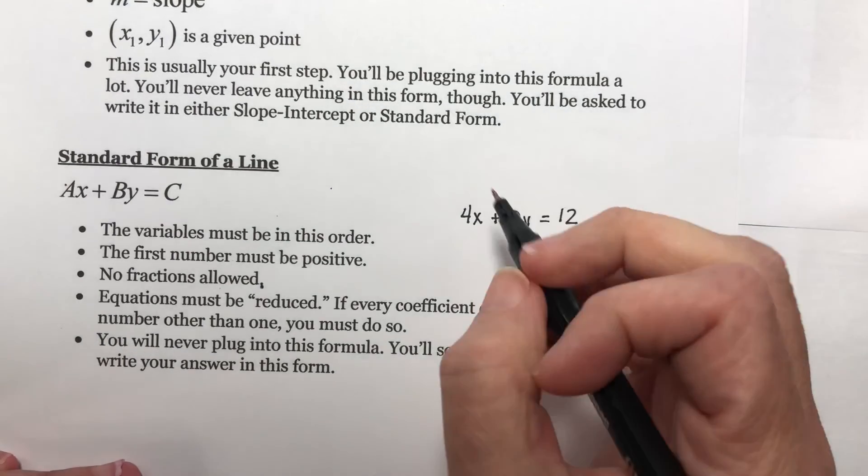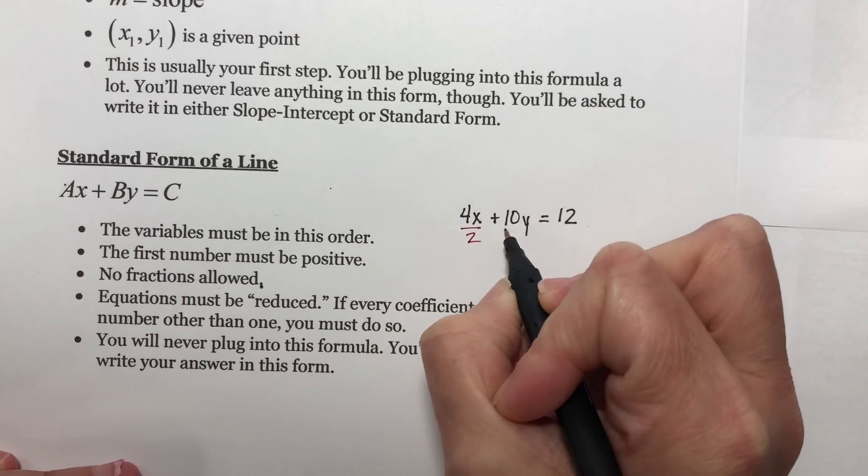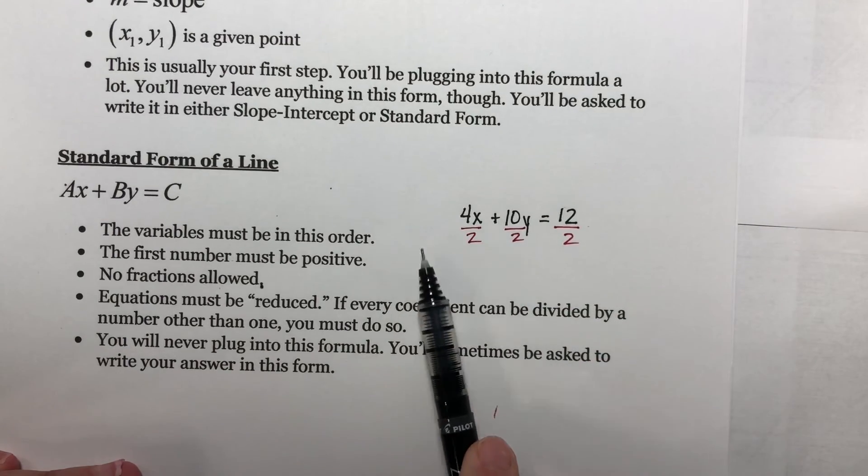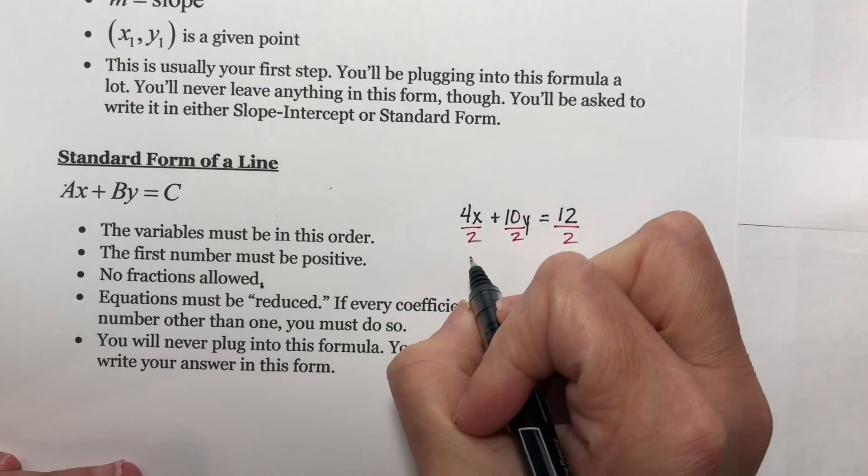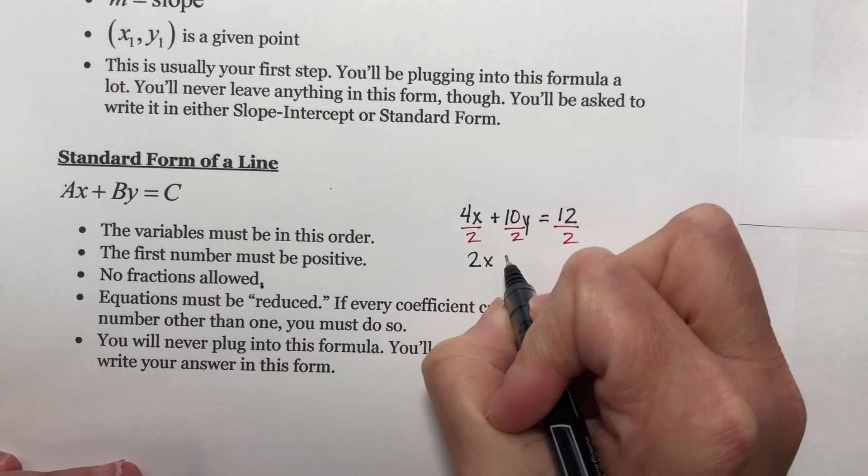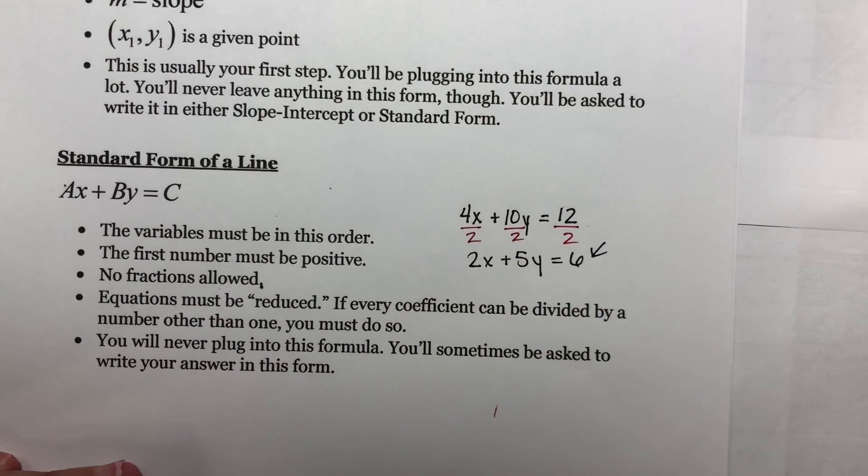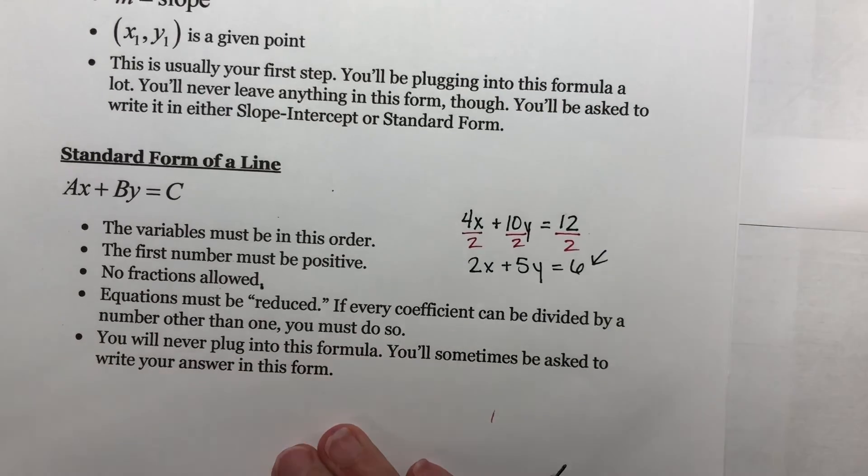I would divide everything here. They're all even numbers, so I'll divide all of them by 2. I'm allowed to do that because I'm dividing both sides by 2. This gives me 2x plus 5y equals 6, and this is standard form. In the next video, we'll start working problems with these.